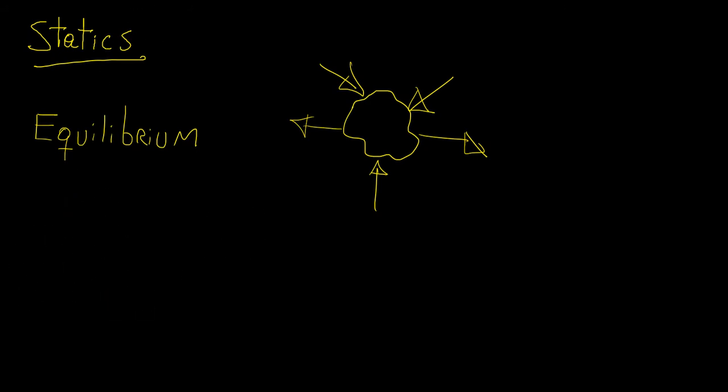So the way that we do this is we say, let's say we have something in two dimensions, and we're going to break it up into x and y components. Then the logical thing to do is say, the sum of the forces in the x direction needs to be equal to zero, otherwise this body would be moving either to the right or to the left.